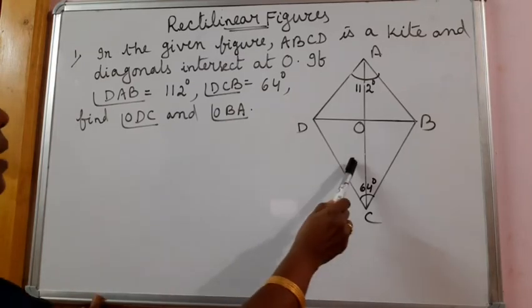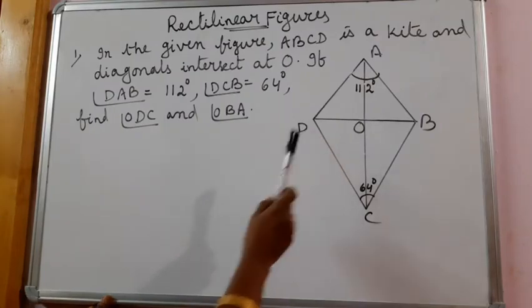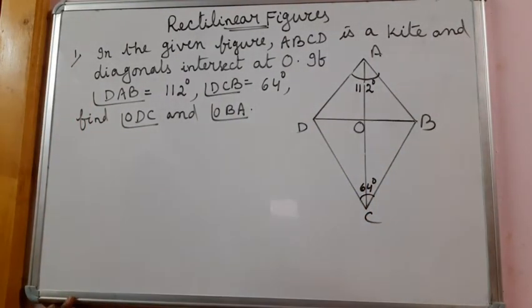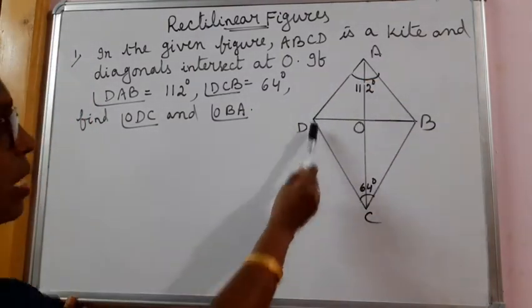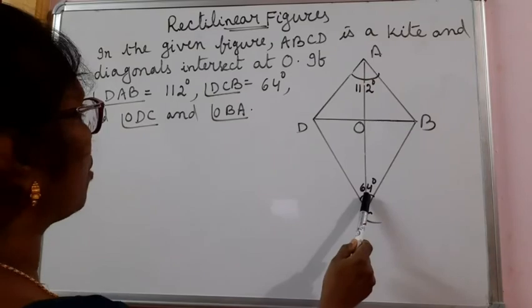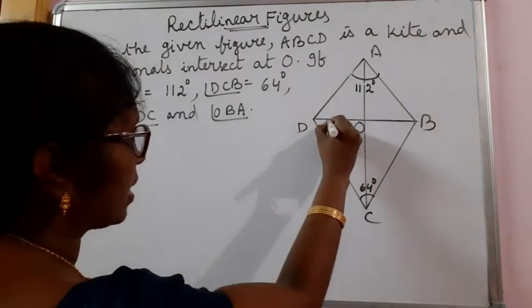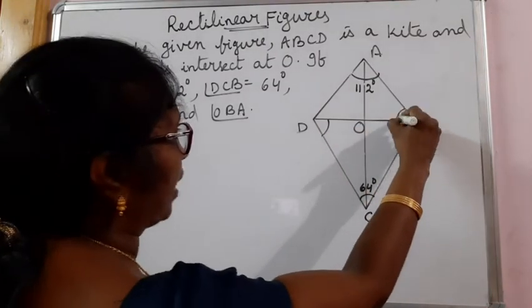The question is, in the given figure, ABCD is a kite and diagonals intersect at O. If angle DAB is 112 degrees, angle DCB is 64 degrees, find angle ODC and angle OBA. We have to find out these two angles.